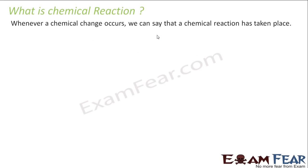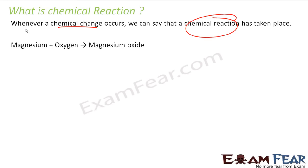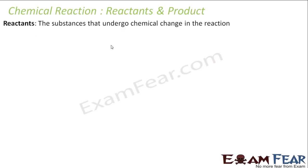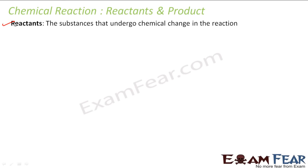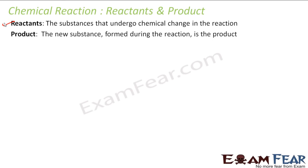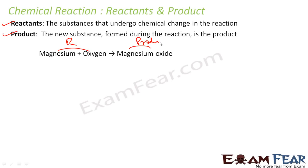We already know what a chemical reaction is — we are just repeating it. Whenever a chemical change occurs, we say that a chemical reaction has taken place. For example, you have magnesium and you burn it in oxygen, you get magnesium oxide. In a chemical reaction, we have reactants — things which undergo the reaction — and products, the new substances formed. In this case, magnesium and oxygen are the reactants, and magnesium oxide is the product.